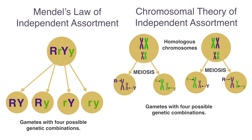Now, there are exceptions to Mendel's laws of inheritance, something we will be exploring in the next lesson. For example, if the genes for two traits are found on the same chromosome — which can happen since a single chromosome can contain hundreds of genes — then Mendel's law of independent assortment does not apply to those traits, and we say that those traits are linked. But let's not worry about that right now. Next time, we will be looking at some of those exceptions to Mendel's laws. Talk to you soon.